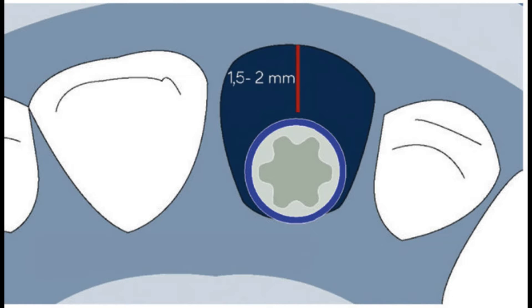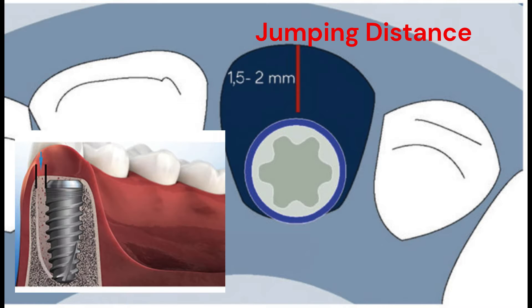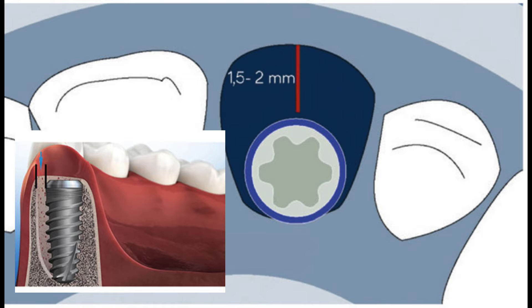Hello everyone, so today we will learn about jumping distance. Jumping distance is the horizontal distance between the surface of the implant and socket wall when the implant is placed immediately after the extraction.